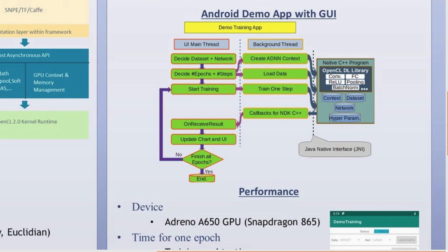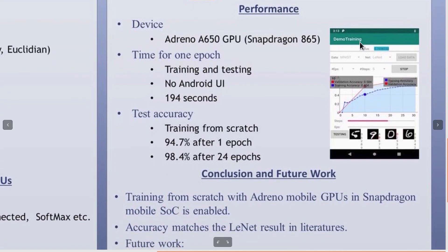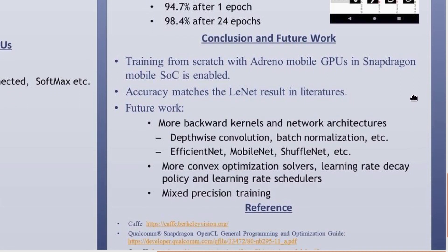Finally, the training, validation, and test accuracies are passed via callbacks from the native C++ program to the UI main thread for visualization. The entire process is repeated until all epochs are finished. The training of LeNet is tested on Snapdragon 865, which contains Adreno A650 GPU. It takes 194 seconds to train and test one epoch without using the Adreno UI. The training achieves 94.7% test accuracy after one epoch and 98.4% accuracy after 24 epochs.